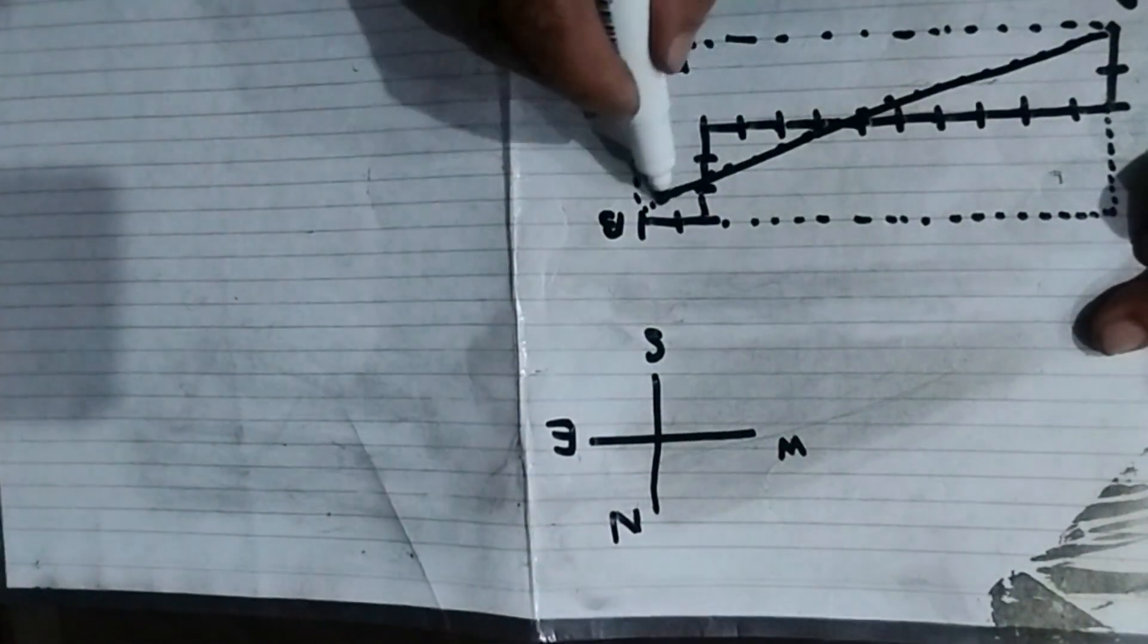Now you can see clearly that A to B line and this line and this line will make a right angle triangle.